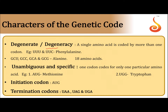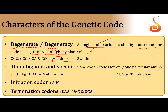The genetic code shows degeneracy, meaning a single amino acid is coded by more than one codon. For example, phenylalanine is coded by two codons: UUU and UUC, both code for phenylalanine amino acid. Another example is alanine, which is coded by four codons.